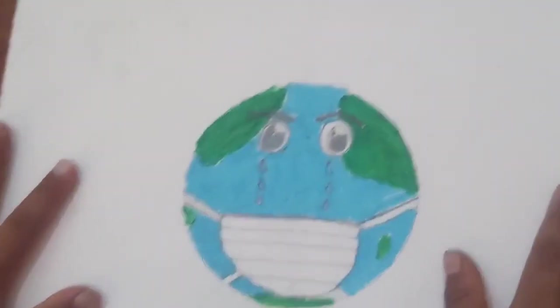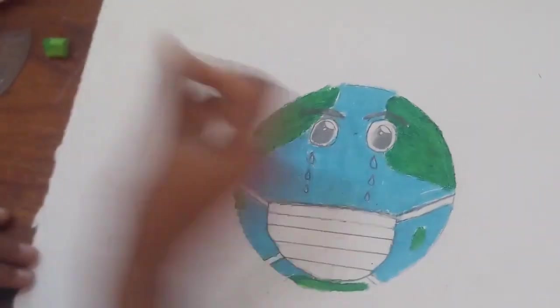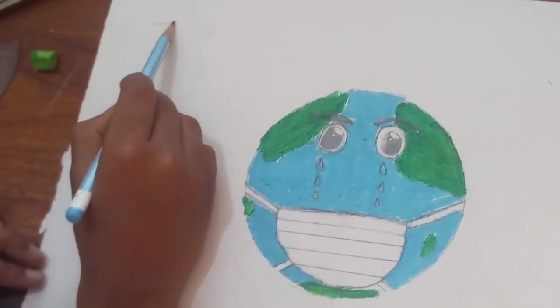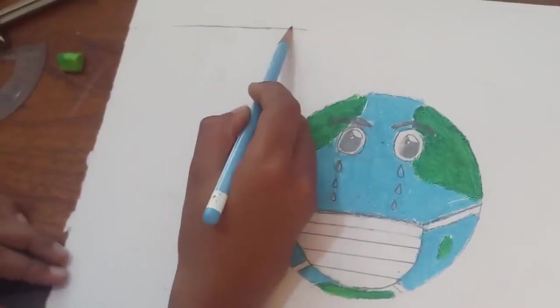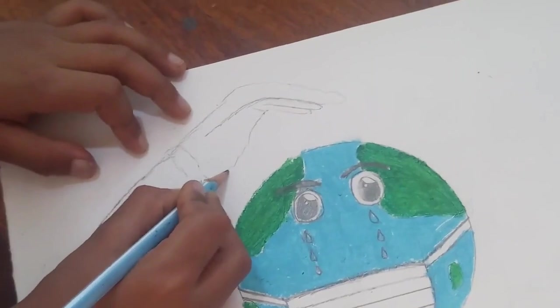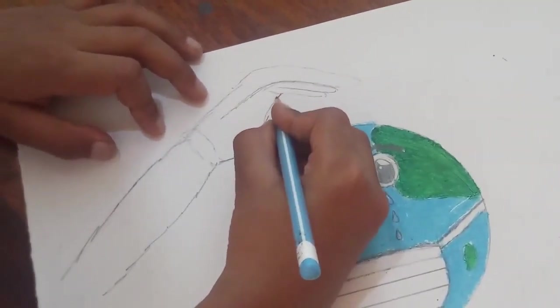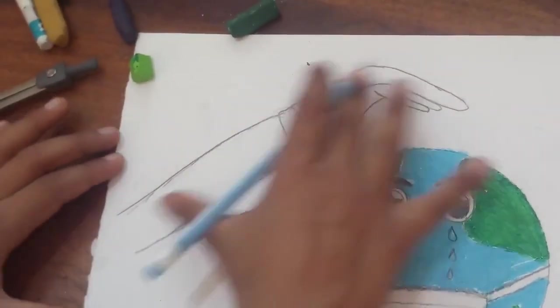Now we will draw the hand. Now we will draw the hand of a doctor surrounding the Earth. We are done with the hand of the Earth. So now we will do the finishing of it. So now we have drawn the hand.